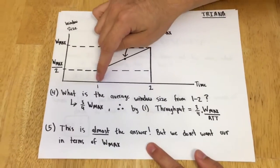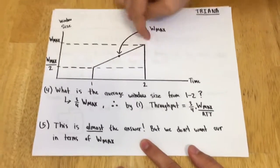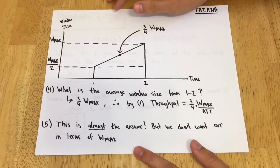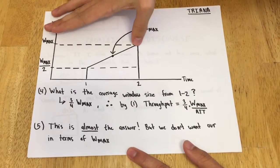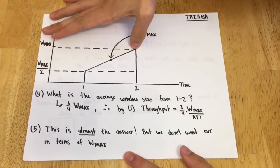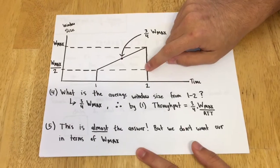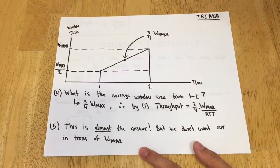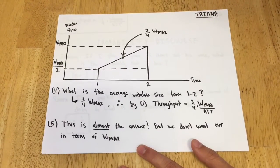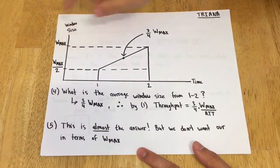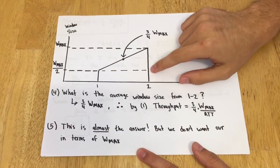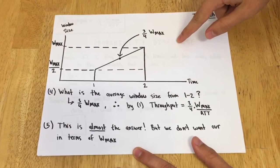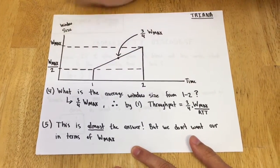This right here is that same single sawtooth with linear additive increase and multiplicative decrease. A few things to keep in mind: the height where the first packet is dropped, which causes our multiplicative decrease, comes at window size W_max. We know the congestion window is cut in half when we receive a drop, so the height it drops to is W_max over 2.